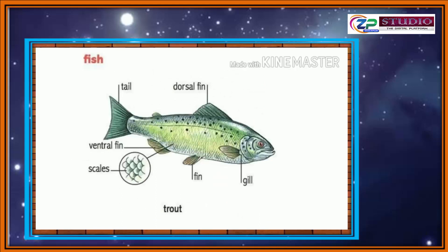This is a fish — an aquatic animal. It has a dorsal fin upwards, tail at the back side, scales, ventral fin, fins, and gill. The gill is a special organ useful for respiration in the water for fishes.